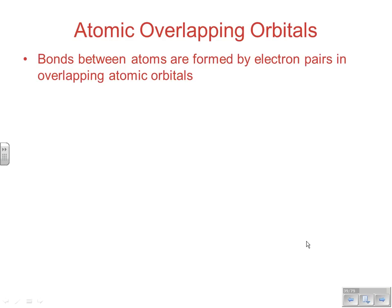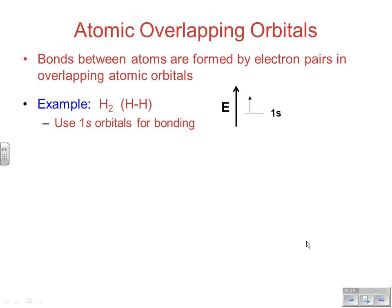One of the problems that scientists had with this can be seen with a relatively simple molecule. Bonds between atoms are formed by electron pairs in overlapping atomic orbitals. A simple example is diatomic hydrogen — you've got 1s orbitals in each case involved in bonding. The two 1s electrons come together and share in an overlapping orbital, which we called a sigma bond.